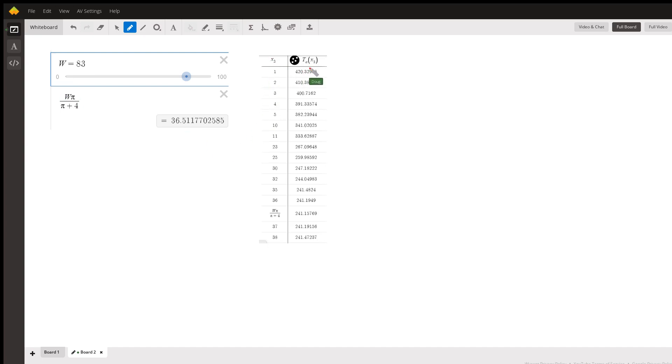And here's a table where I evaluate the total area at different values of x, which by the way is also the circumference of the circle. Because remember, x was a piece of wire that we bent into the shape of a circle, and that's the circumference.